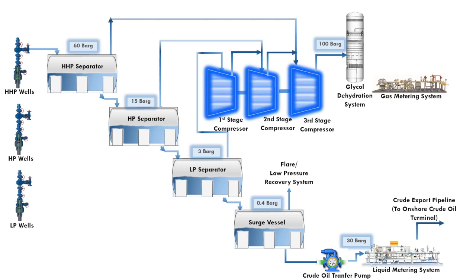The purpose of the gas dehydration system is to dry the gas. Natural gas often contains water which can cause damage to pipelines and equipment through formation of hydrates. The water can also cause corrosion to downstream pipelines and equipment. Thus the water must be removed, and it is removed from the gas using a water absorbing material known as glycol.